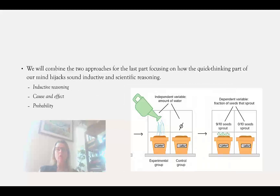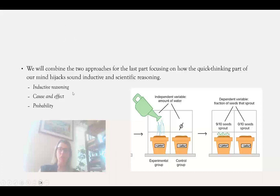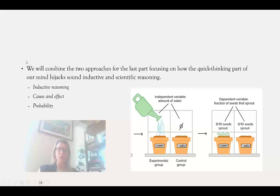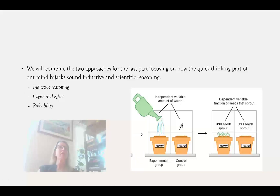Finally, in the last part of the course, we will combine these two approaches, focusing on how the quick thinking of our mind hijacks sound inductive and scientific reasoning. We'll look at inductive reasoning, probability, scientific reasoning, and how we often get these things wrong. We jump to conclusions or fail to consider other causes — we construct a nice, easy story about cause and effect, and because that story sounds so good we jump on board with it, even though there might be another, truer explanation out there. So that is our approach to the class — I will see you soon.